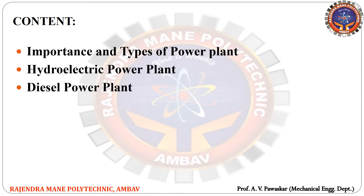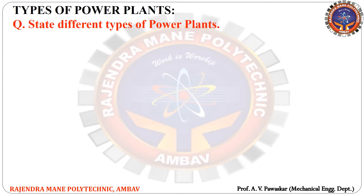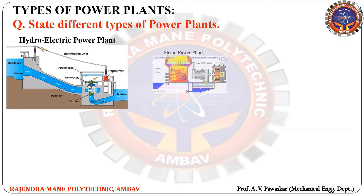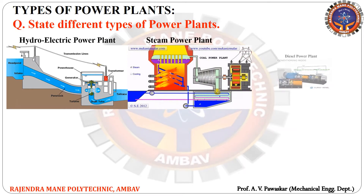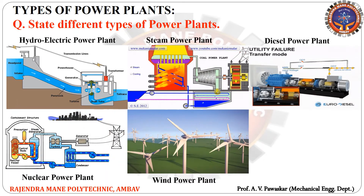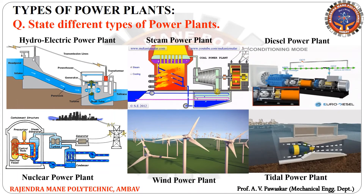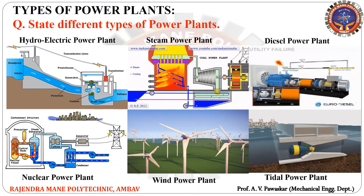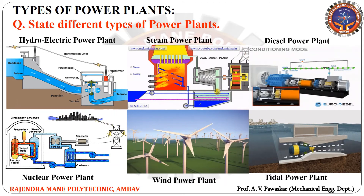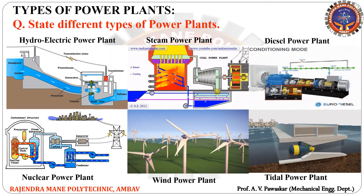Now let's discuss the types of power plant. A question can be asked in the exam: state different types of power plant. The types are: hydroelectric power plant, steam power plant, diesel power plant, nuclear power plant, wind power plant, and tidal power plant. These are all the types of power plants we will study in this subject.